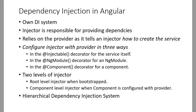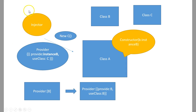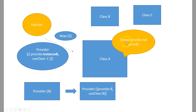Now let us understand this in terms of Angular. Angular has its own dependency injection system. The container is replaced with an injector, and the configuration metadata is replaced with a provider. The injector relies on the provider for creating instances. In Angular, we ask for dependencies in the constructor — we mention it as a parameter of type instance B, and the injector checks the provider and understands what to inject.